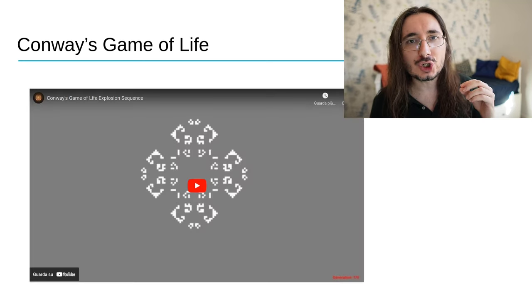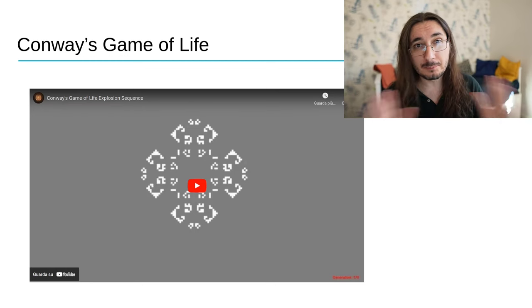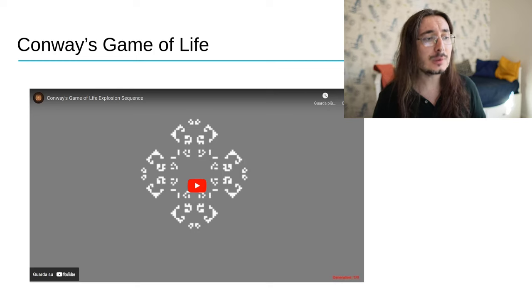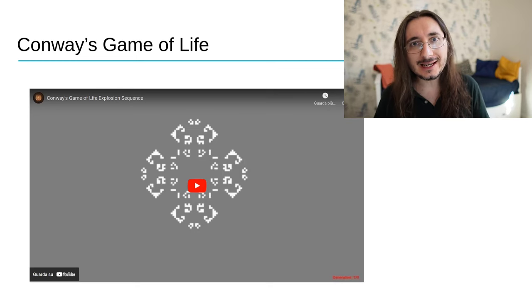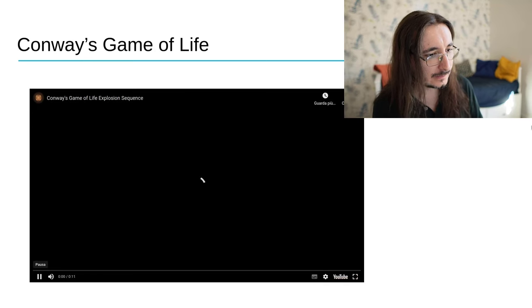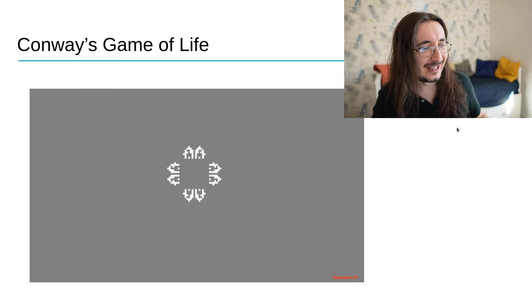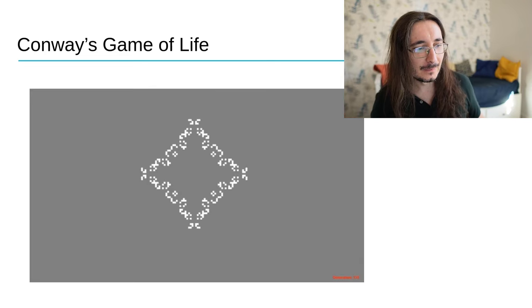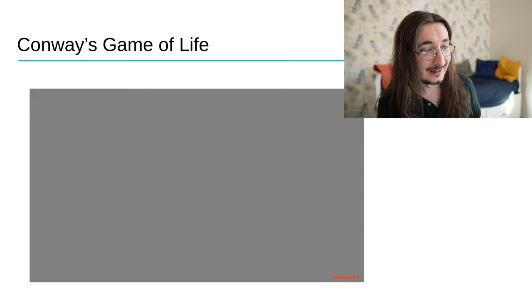As an example, let me show you a fascinating cellular automaton that's also probably the most popular out there. It's called Conway's Game of Life. It tries to simulate life on a grid. Let's see how this works. You can see the evolution of the patterns there. It's quite fascinating, isn't it?